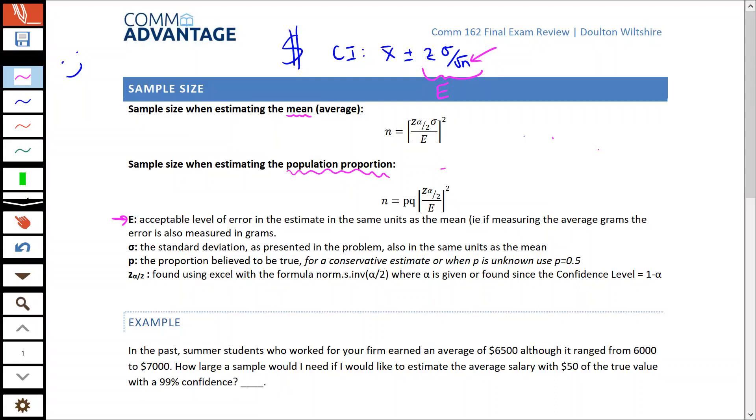Sigma, standard deviation, is also in the same units as the mean. Sometimes though, they try to trick us - we just want to make sure we know the rule that standard deviation equals the range divided by four. Sometimes they give us that range instead of the actual standard deviation. We just have to remember from way back in the beginning of our course that if we divide the range by four, we get a stand-in for standard deviation.